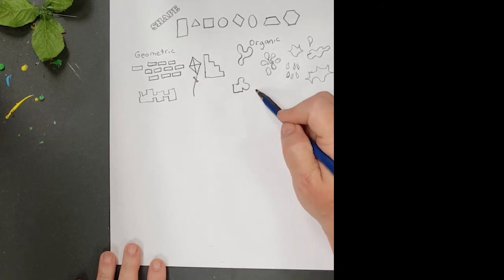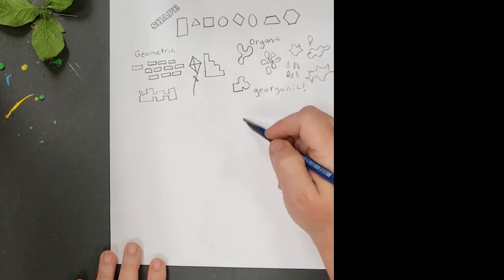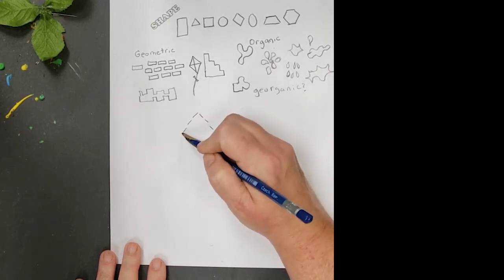What if you combined a geometric shape and an organic shape? What would you get? A geo-organic? An orgometric? I don't know, but artists often use both in their artworks.